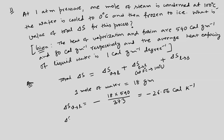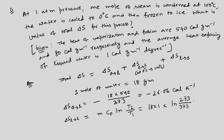For the liquid cooling step, we use delta S equals M C_p ln(T2/T1), which gives 18 times 1 times ln(273/373), resulting in minus 5.62 calorie per Kelvin.